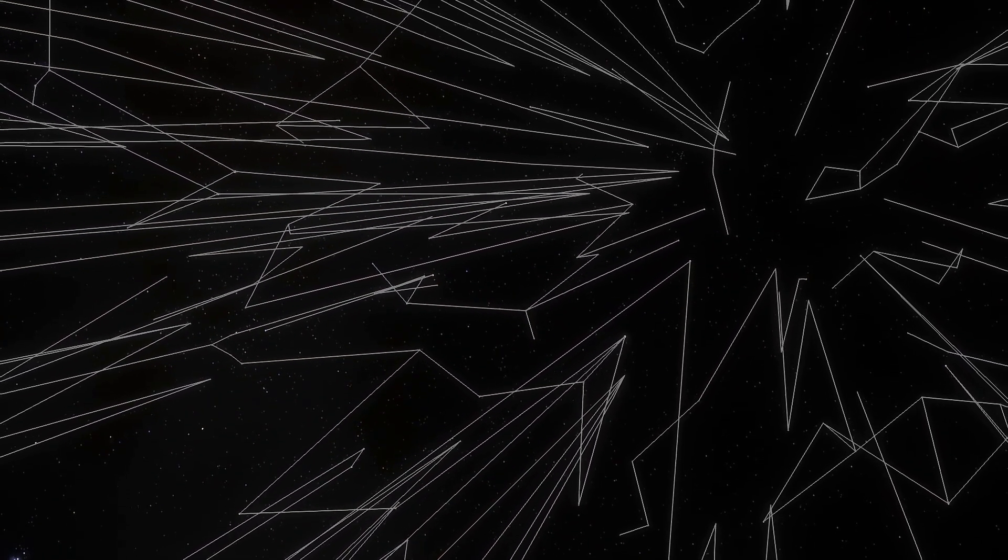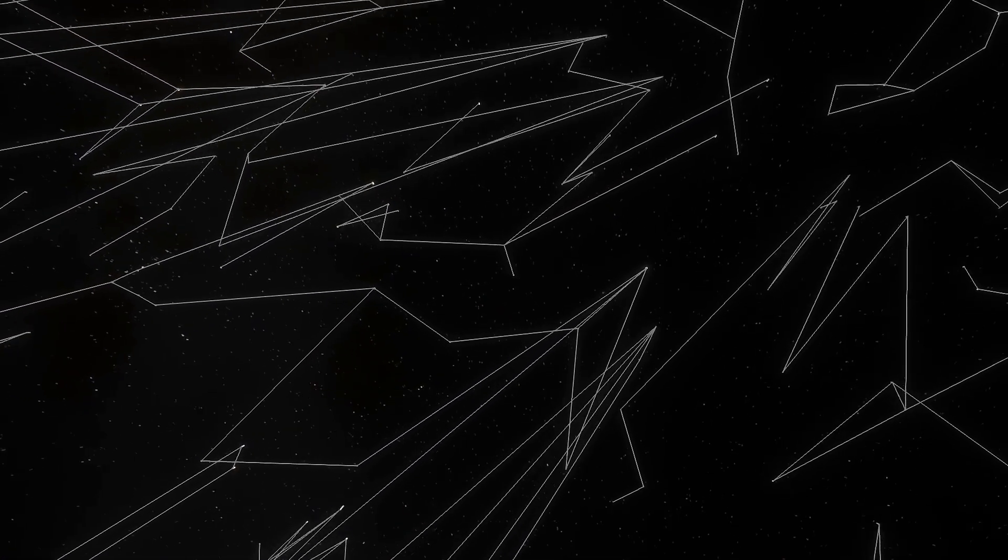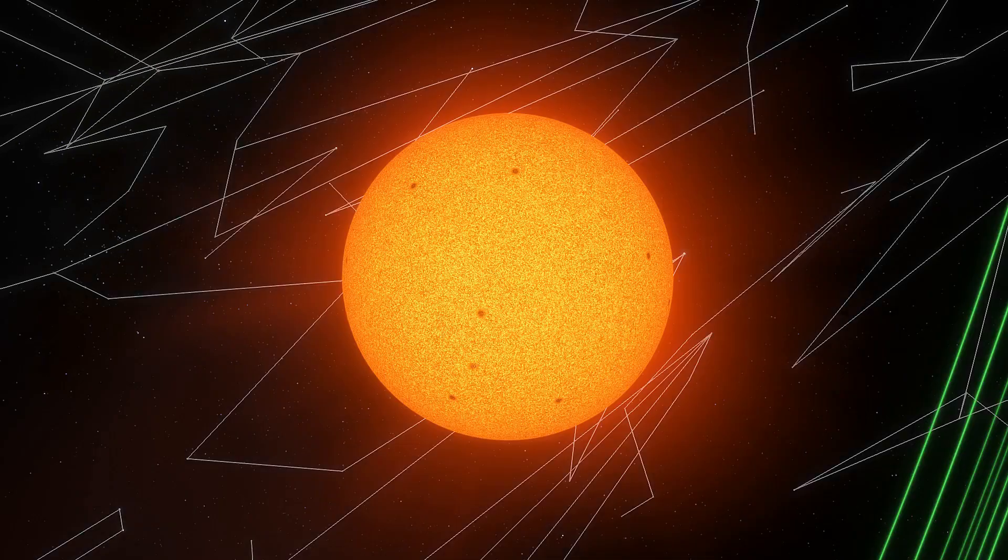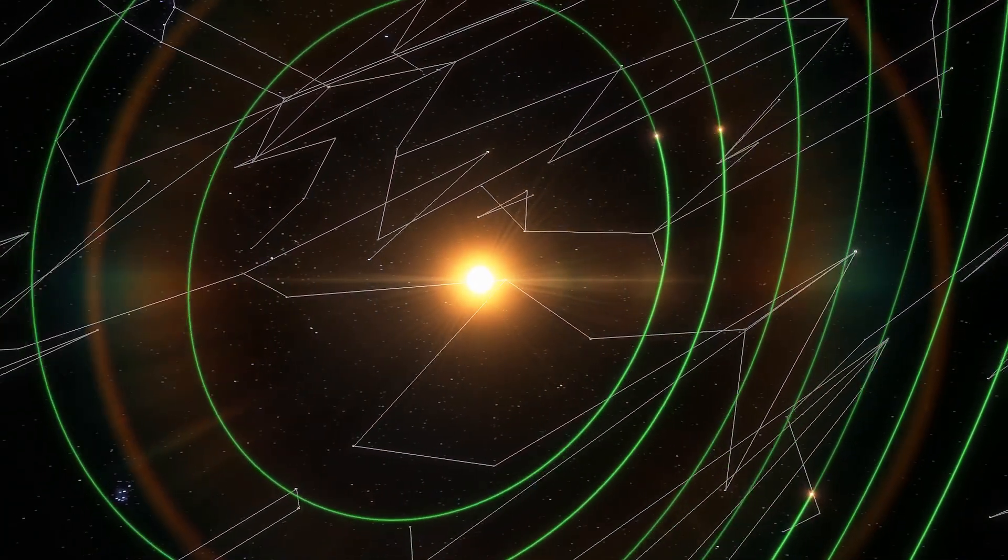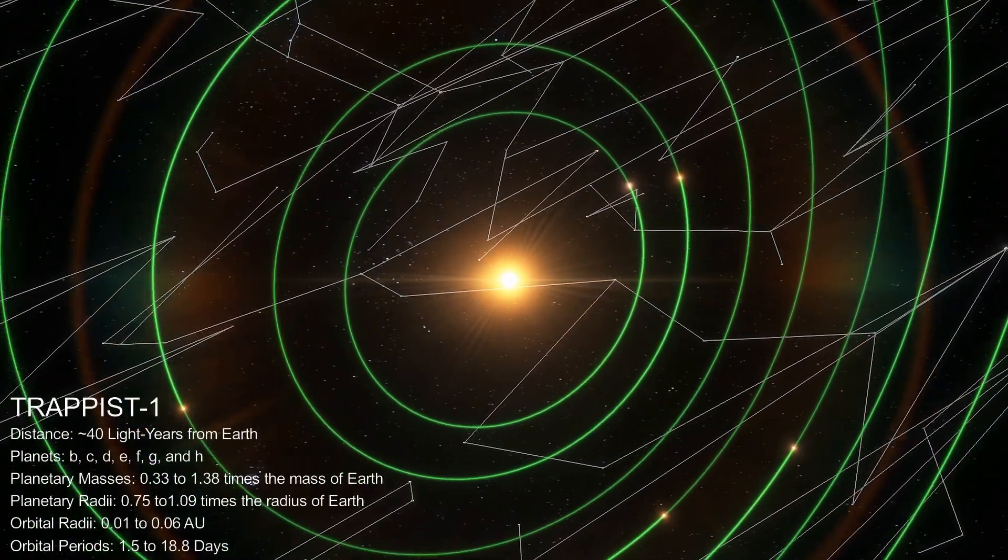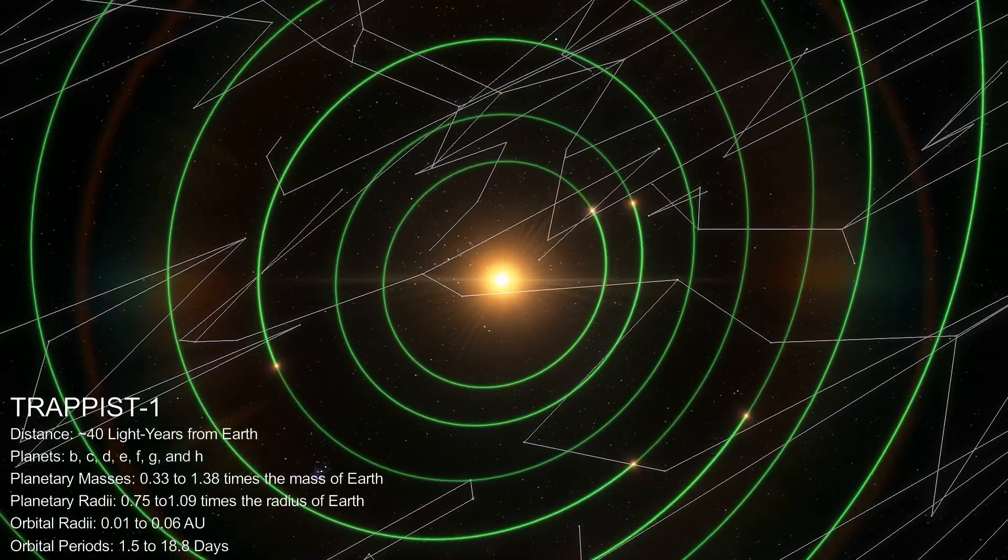The star we are going to weighs in under 100 times the mass of Jupiter, which brings it near the lower limit of where we can expect nuclear fusion to be possible in its core. Welcome to TRAPPIST-1, the mini solar system analog.